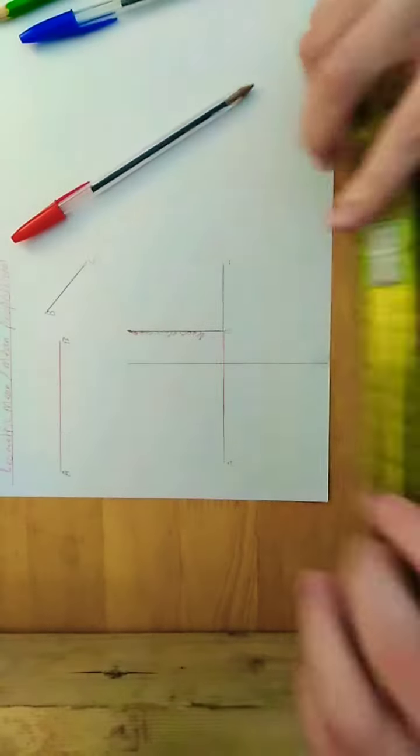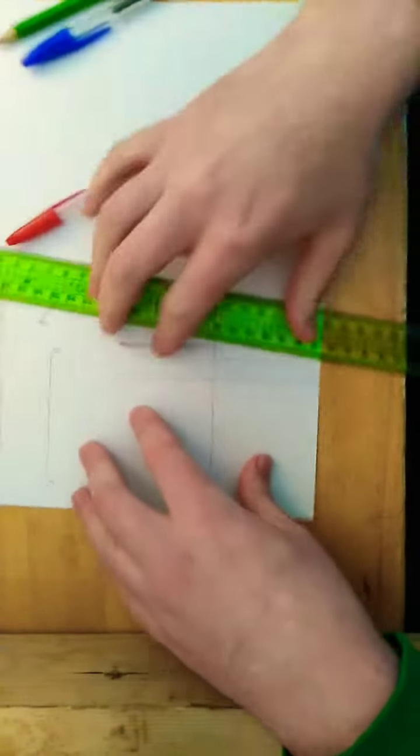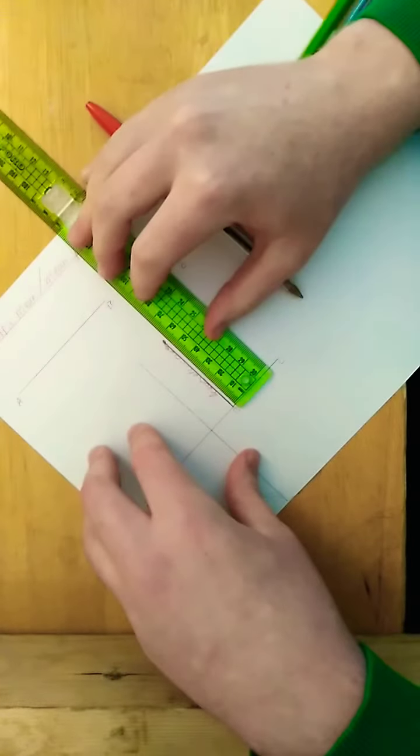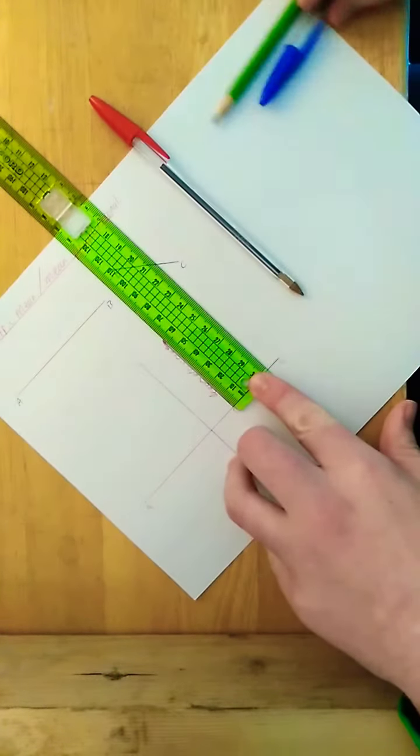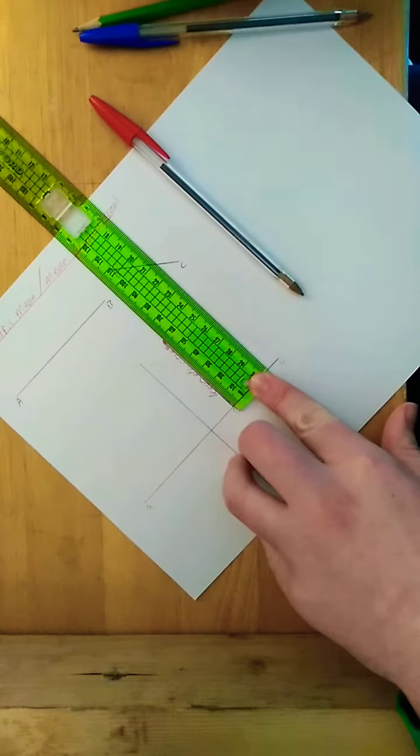So there's the geometric mean there. So if I were to measure it to show you the difference between algebraic mean and geometric mean, that is 5.6 centimeters long.